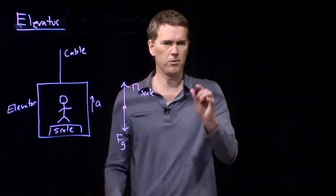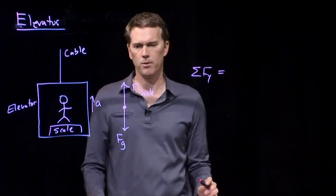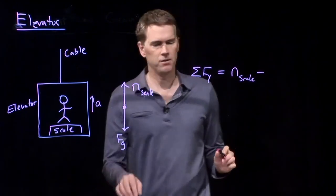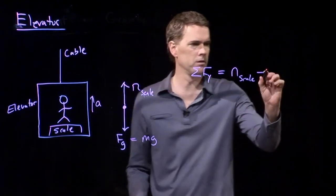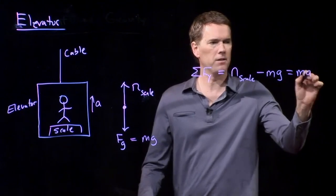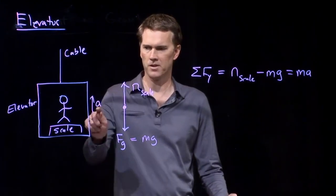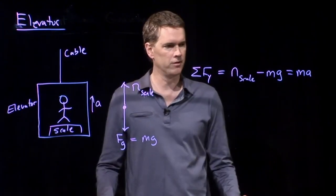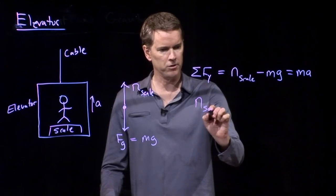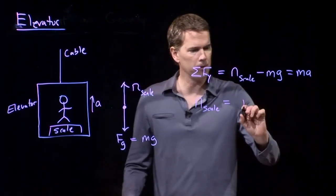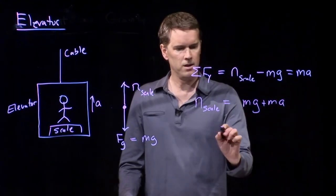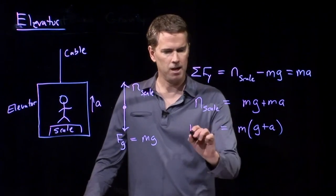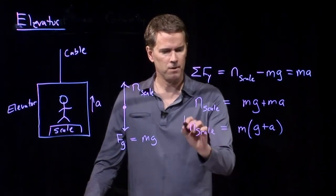We know we don't have any forces in the x direction. But we do have forces in the y direction. And the forces that we have are n of the scale minus gravity, which we know is mg. And all of that is equal to the mass times the acceleration of the elevator. We don't know exactly what that a is yet, but we drew it going up. So it's the same direction as the normal force from the scale. And now we can write the normal force from the scale. It's just equal to mg plus ma. And in fact, we can combine the g and the a, because they both have a common factor of m. And this is what we get for the normal force from the scale.